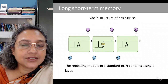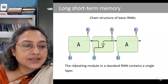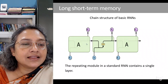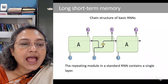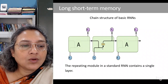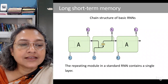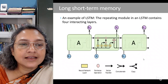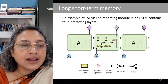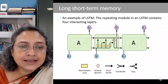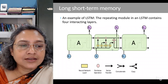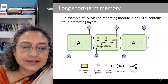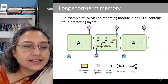A basic RNN has a chain-like structure with inputs at different time steps x_{t-1}, x_t, and x_{t+1}, and hidden units at these time steps. Each unit has a non-linear function such as tanh or sigmoid. This is a standard RNN containing a single layer. On the other hand, a long short-term memory or LSTM has a hidden unit in its repeating module that contains four interacting layers, which we will discuss in detail.